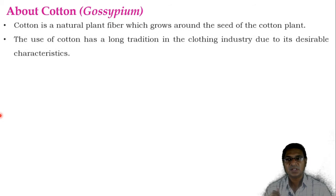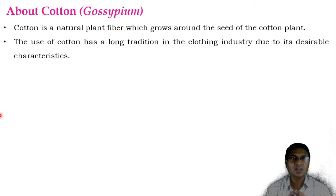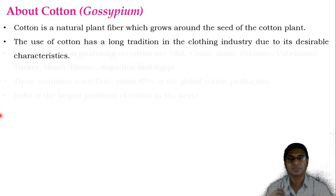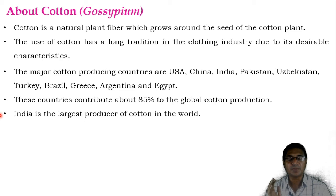In short, we discuss about the Gossypium or the cotton. Cotton is a natural plant fiber which grows around the seed of the cotton plant. The use of cotton has a long tradition in the clothing industry due to its desirable characteristics. The major cotton producing countries are USA, China, India, Pakistan, Uzbekistan, Turkey, Brazil, Greece, Argentina and Egypt — these 10 countries contribute about 85% of the global cotton production.